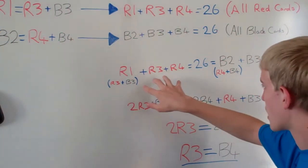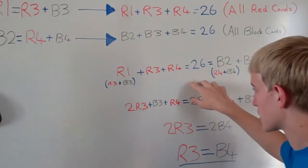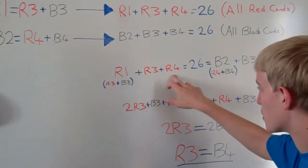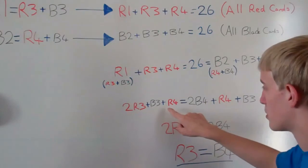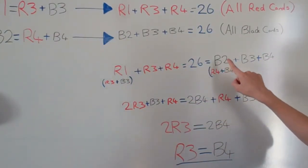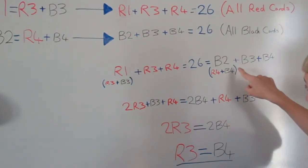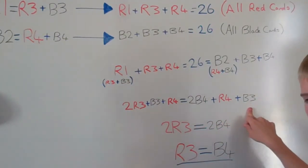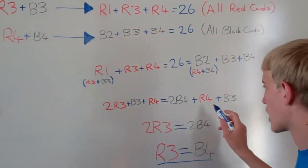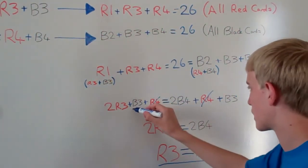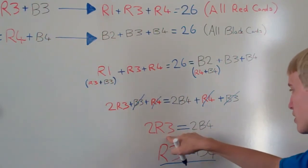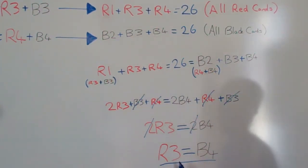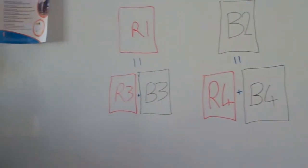So if you put them together, you end up having R1 plus R3 plus R4 equals 2R3 plus B3 plus R4. Same on the other side, you have B2, so it's R4 plus B4 plus B3 plus B4. But we can now start canceling them out. You both have an R4, so we can cancel them out. We both have a B3, so we can cancel them out. You have 2R3 equals 2B4, but you can get rid of both twos, divide them both by two, and there is the answer to the equation: R3 equals B4. And that is the math behind the trick.